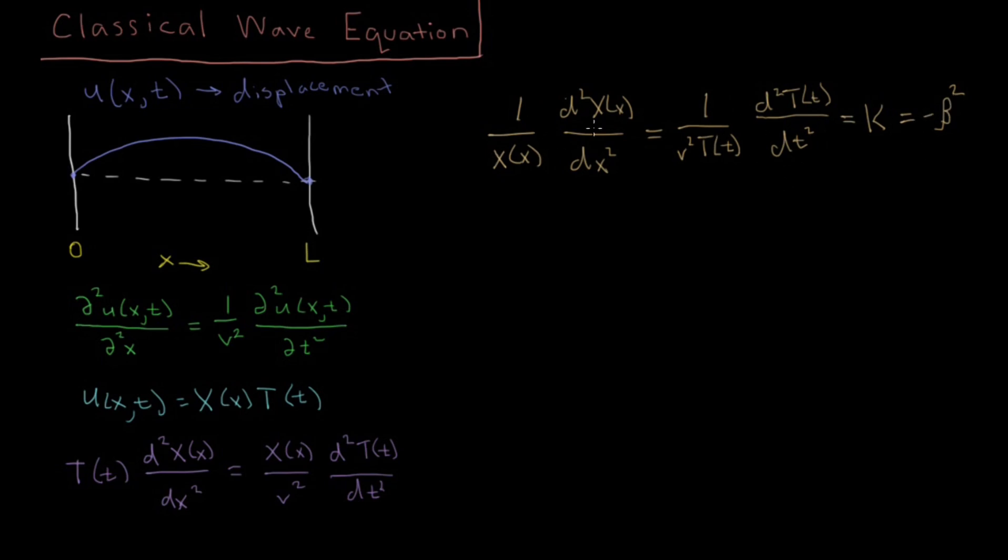So if I multiply, if I take this side and I multiply by the X(x) function, I'm going to get that the second derivative of x, of a function with respect to x, equals that same function times a negative constant squared. And similarly for t, I'm going to get back the second derivative of this function with respect to t equals minus v squared beta squared T(t). If you multiply both sides by v squared T, you'll get this result here.